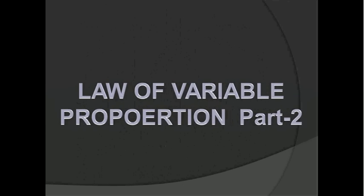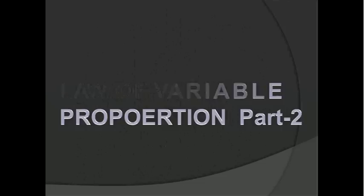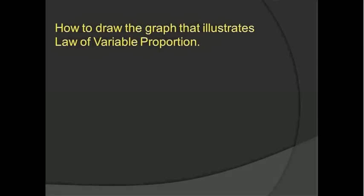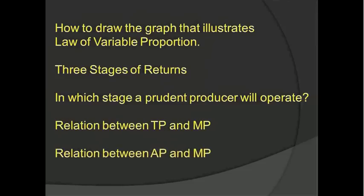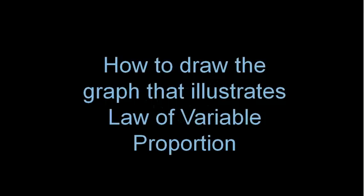Law of Variable Proportion. In this clip, I am going to tell you how to draw the graph that illustrates the Law of Variable Proportion, the three stages of returns, in which stage a prudent producer will operate, the relation between Total Product and Marginal Product, and the relation between Average Product and Marginal Product.